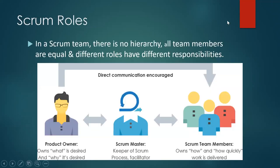This is the Scrum team and the different roles in Scrum. The Scrum team is the one which uses the Scrum framework to deliver increments in an Agile model. There is no hierarchy in the Scrum team — all team members are considered equal. There is no lead, no manager — whether it is the product owner, the Scrum master, or the development team members, all are equal, but they have different responsibilities.